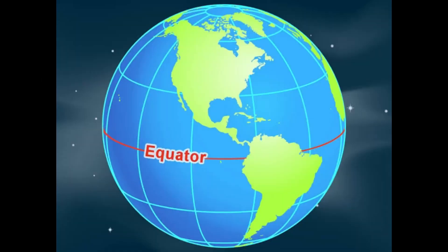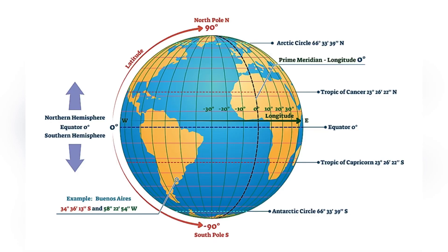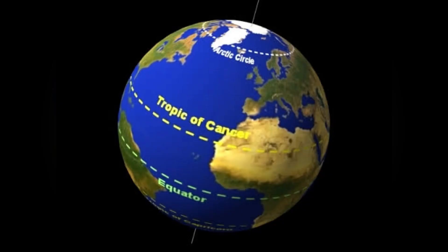We have seen what is the equator in our previous video. Those who have not seen, please check the description for the link. Tropic of Cancer — it is located approximately 23.5 degrees north of the equator. It is the latitude where the sun's rays can appear directly overhead at noon.